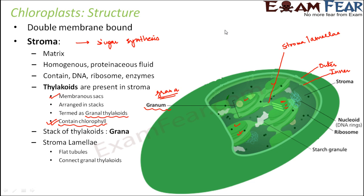To summarize in simple words: you have a fluid-filled space called stroma. In that stroma you have stacks of coins — each stack is called a granum and each coin is called a thylakoid. The grana are joined together by stroma laminae. Chlorophyll is present in the thylakoids, and the sugar synthesis part of photosynthesis takes place in the stroma. These are the important parts of the chloroplast.